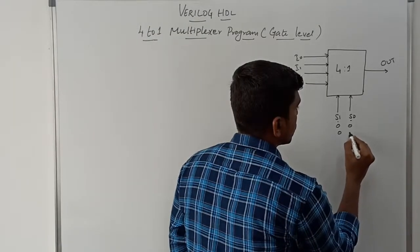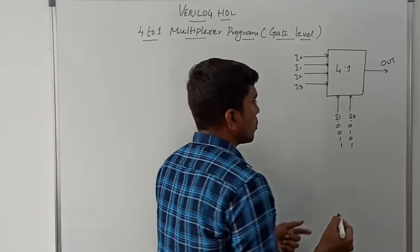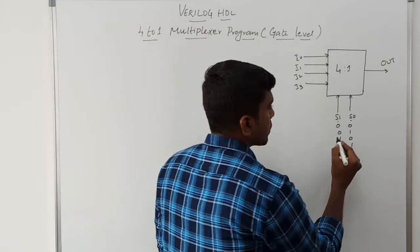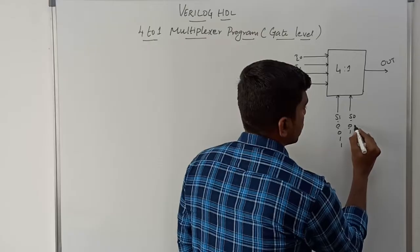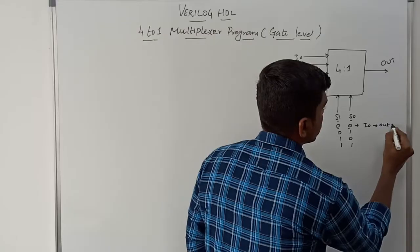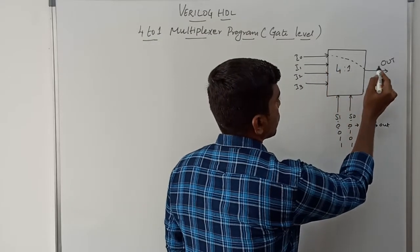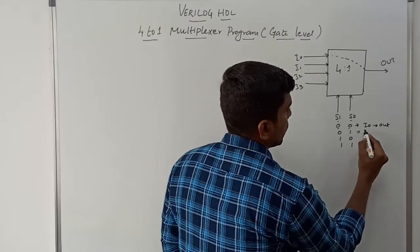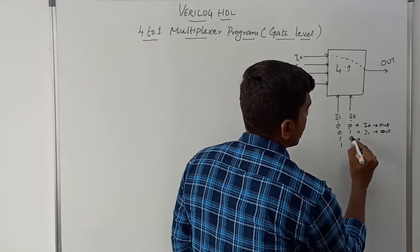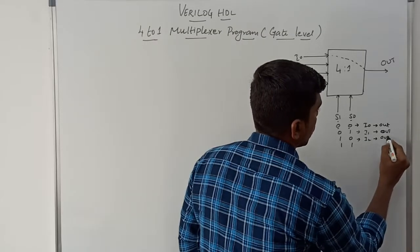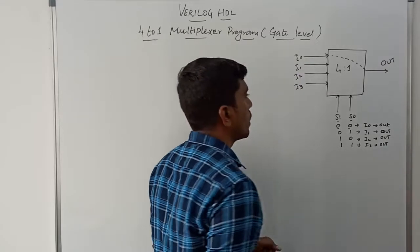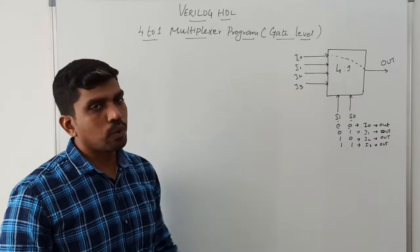The 4 selection line combinations are: S1=0, S0=0 connects I0 to output; S1=0, S0=1 connects I1 to output; S1=1, S0=0 connects I2 to output; and S1=1, S0=1 connects I3 to output. Based on the selection line only, the input value is connected to the output side. This is the basic block diagram of the 4-to-1 MUX.